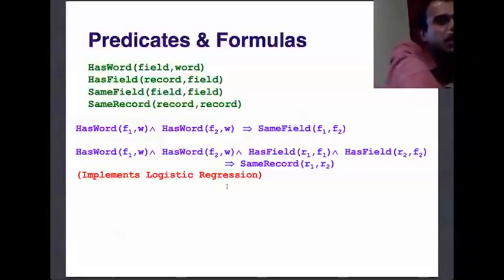The second one is saying the same thing for the record. It is saying that if there is a field which has word W, and field 1 appears in record 1 and field 2 appears in record 2, then corresponding records are the same. You are just taking the words from the field and using it to match the records. This is basically a pairwise independent model. For every pair, you are just saying how many words match and then you declare it as match or not match. The weights can be learned from data. We actually hand-labeled some of the pairs and some data was available already.